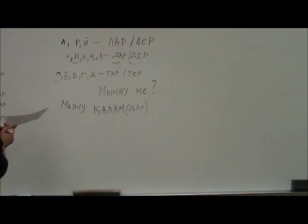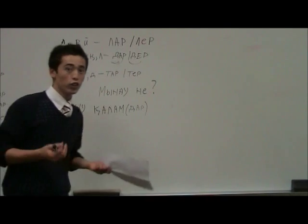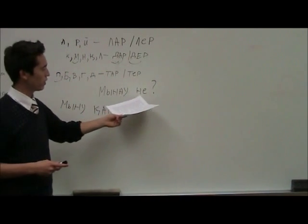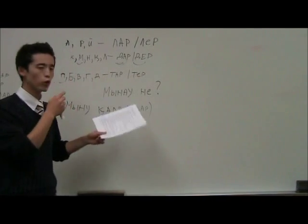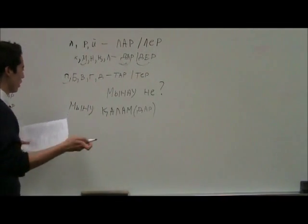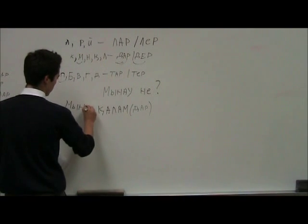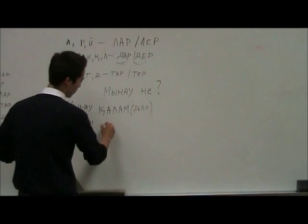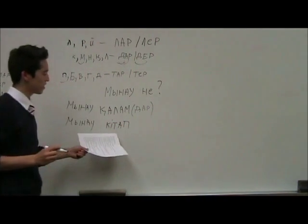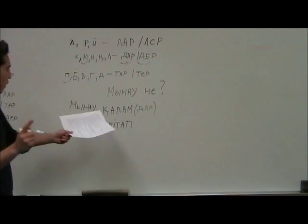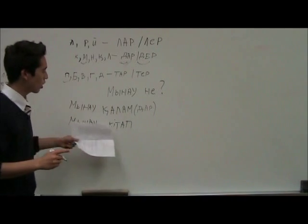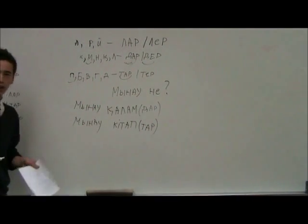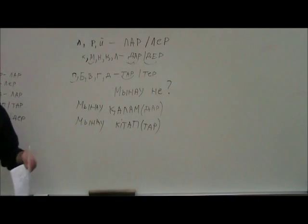Let's give another example. Papa, manau nia — what is these? Let's say book. Manau k'tap. K'tap is one book, right? If I want to say these are books: manau k'taptar. Do you remember this plural ending? It ends with p, so we add tar. K'tap → k'taptar. Manau nia — kalam dar. Yeah?